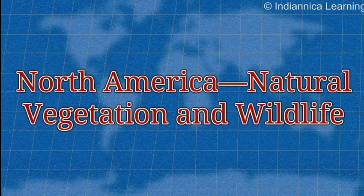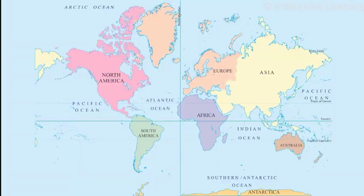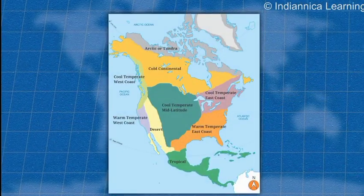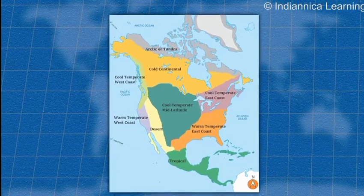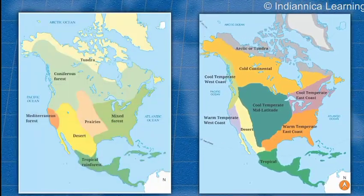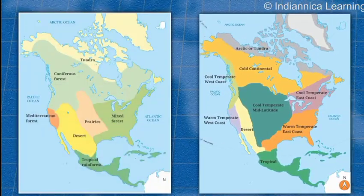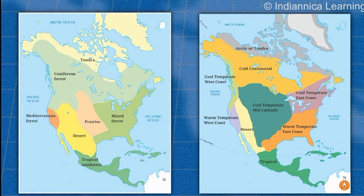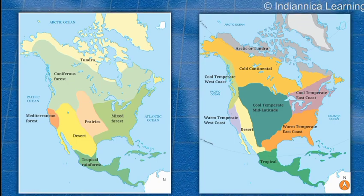North America natural vegetation and wildlife. North America is the third largest continent in the world. Due to its vast extent, it has various climatic zones. Each climatic zone has a distinct type of natural vegetation and wildlife. Let us learn about them in detail.